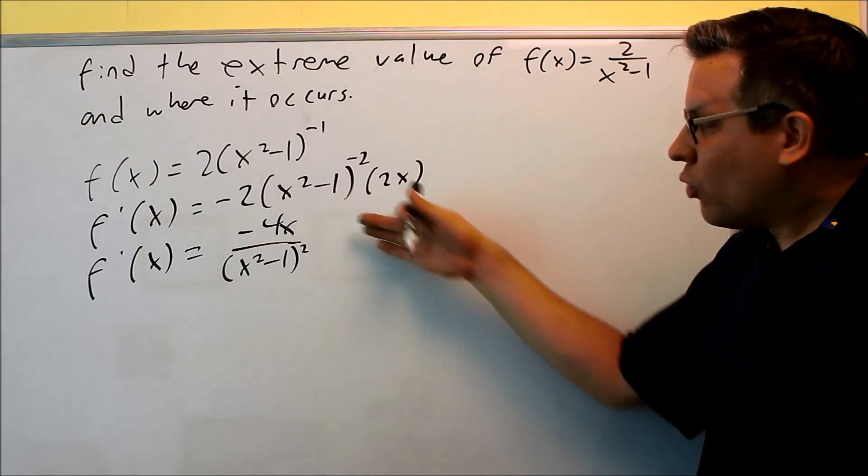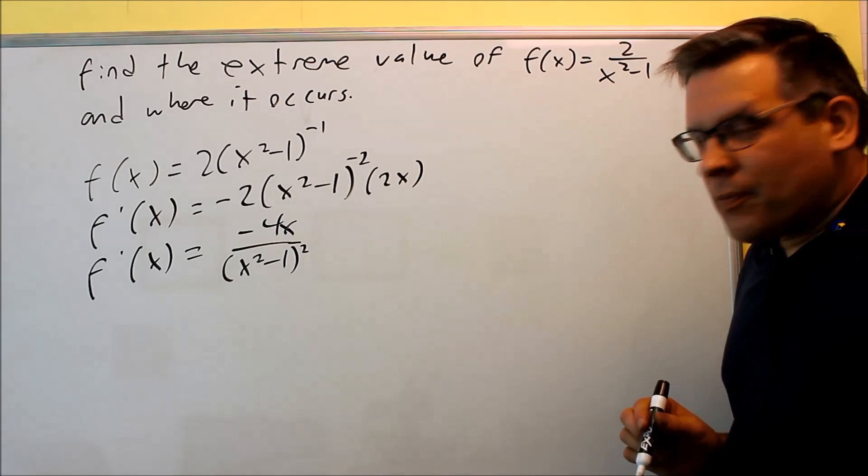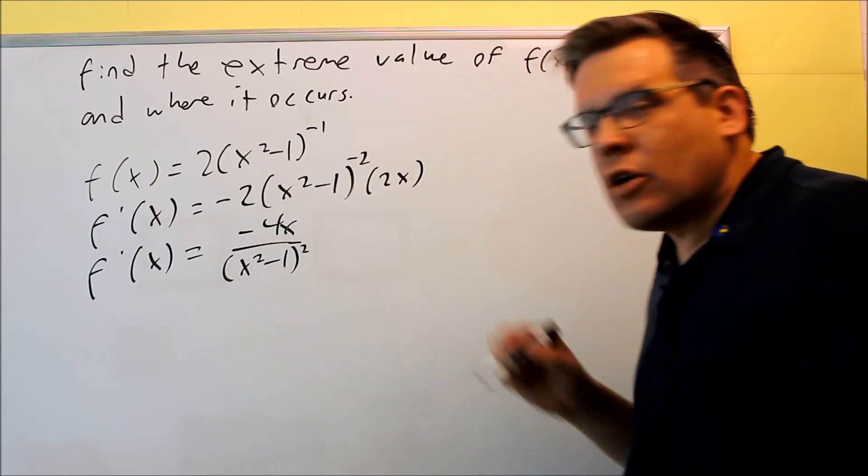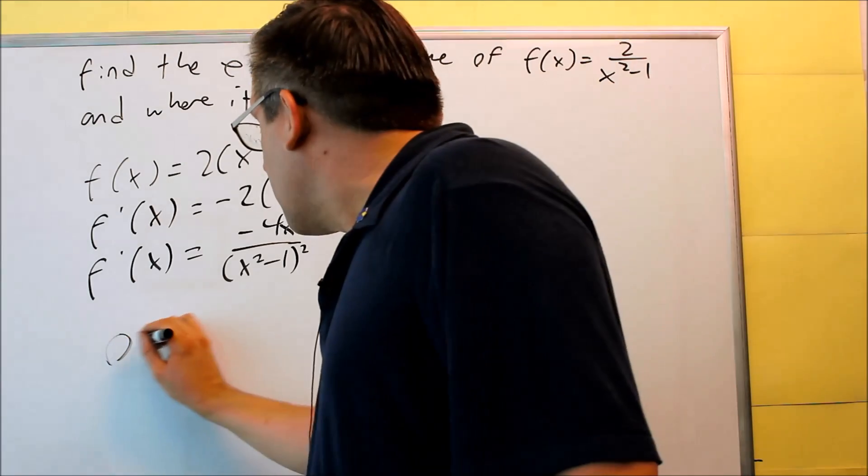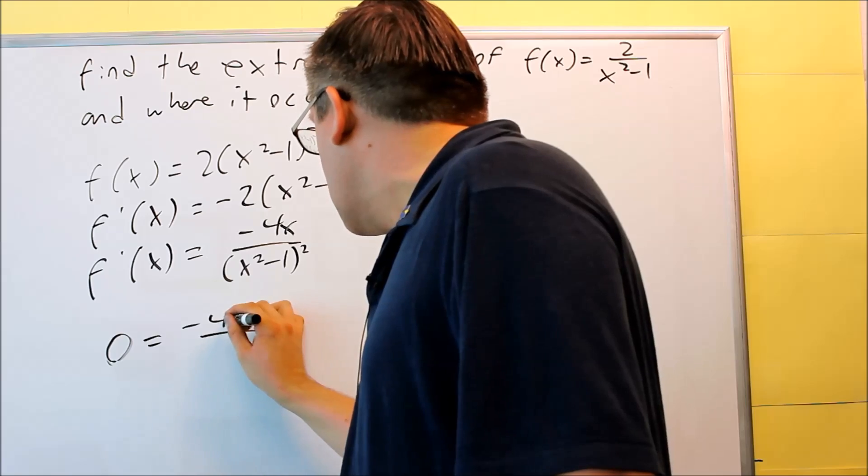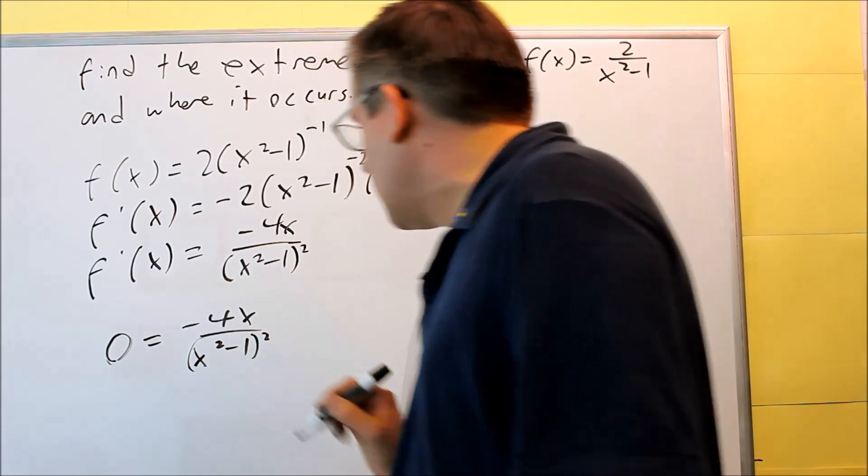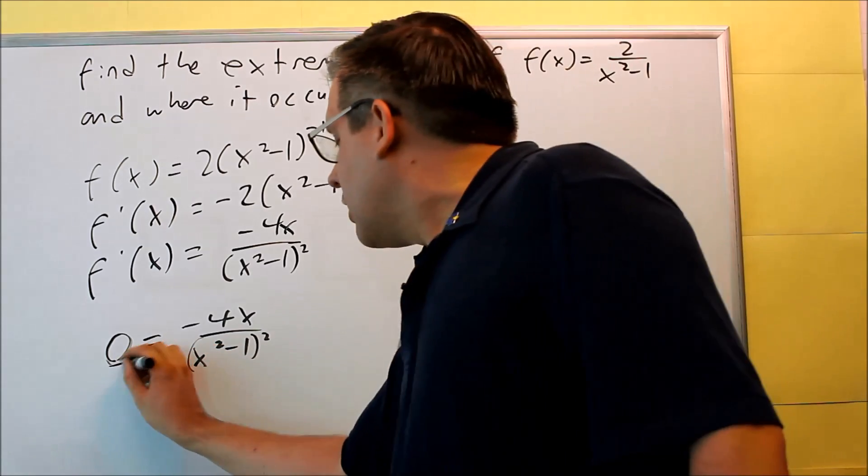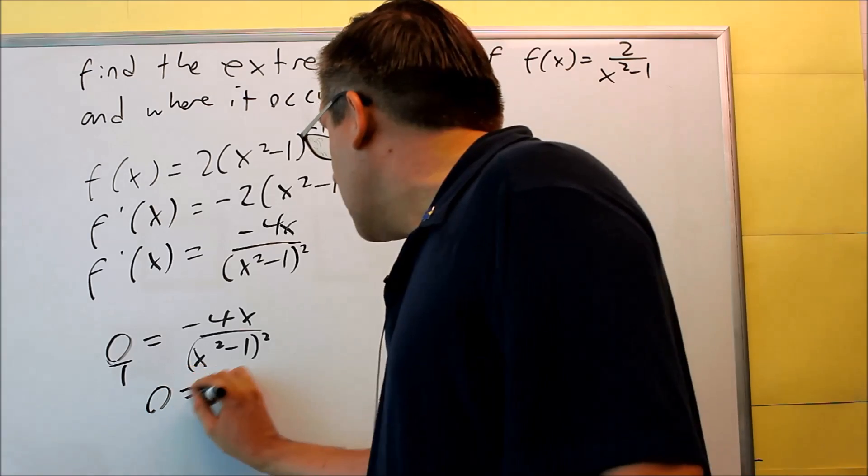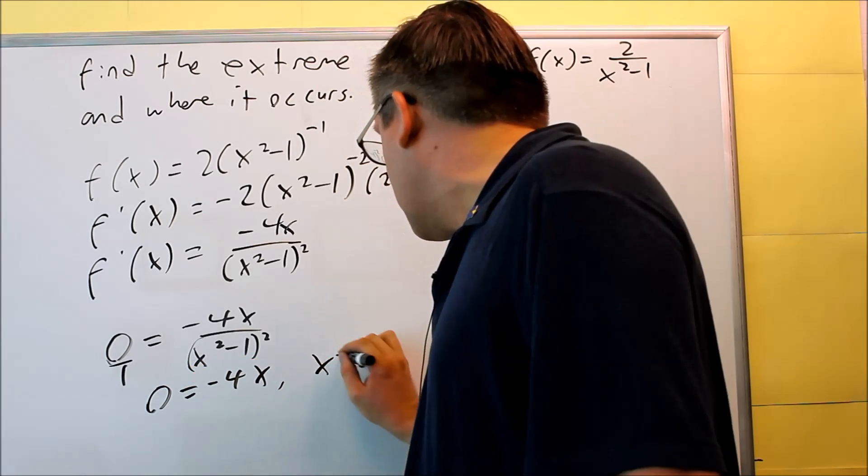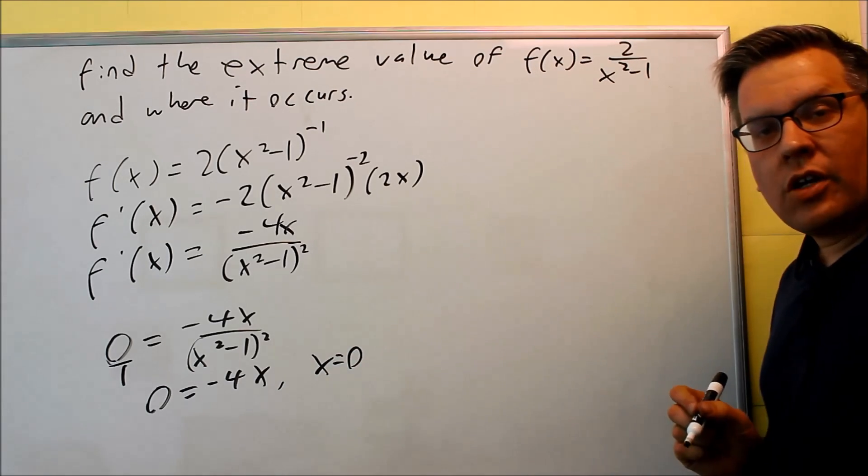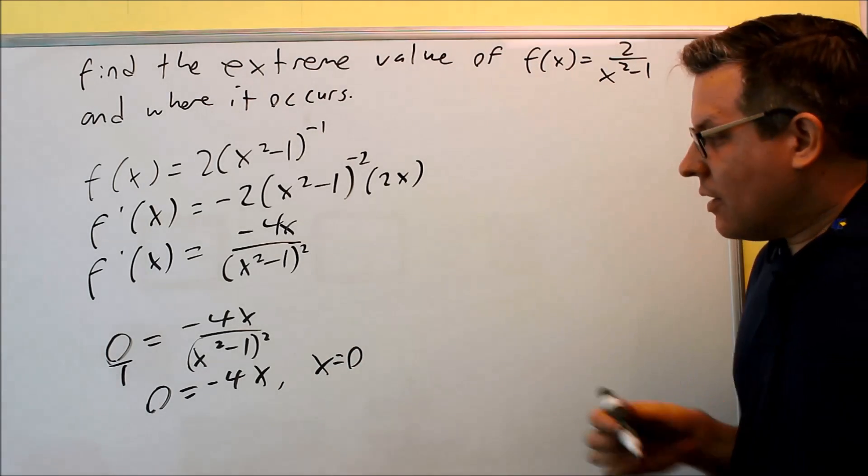So this is going to be rewriting it, we'll get this. So we need to take a look at what the critical values are going to be. The first thing we can do is set the derivative equal to 0, and if we do that, if we cross-multiply, we'll get 0 equals negative 4x, so that means that I get x is equal to 0. So x equals 0 is going to be one of my critical numbers.